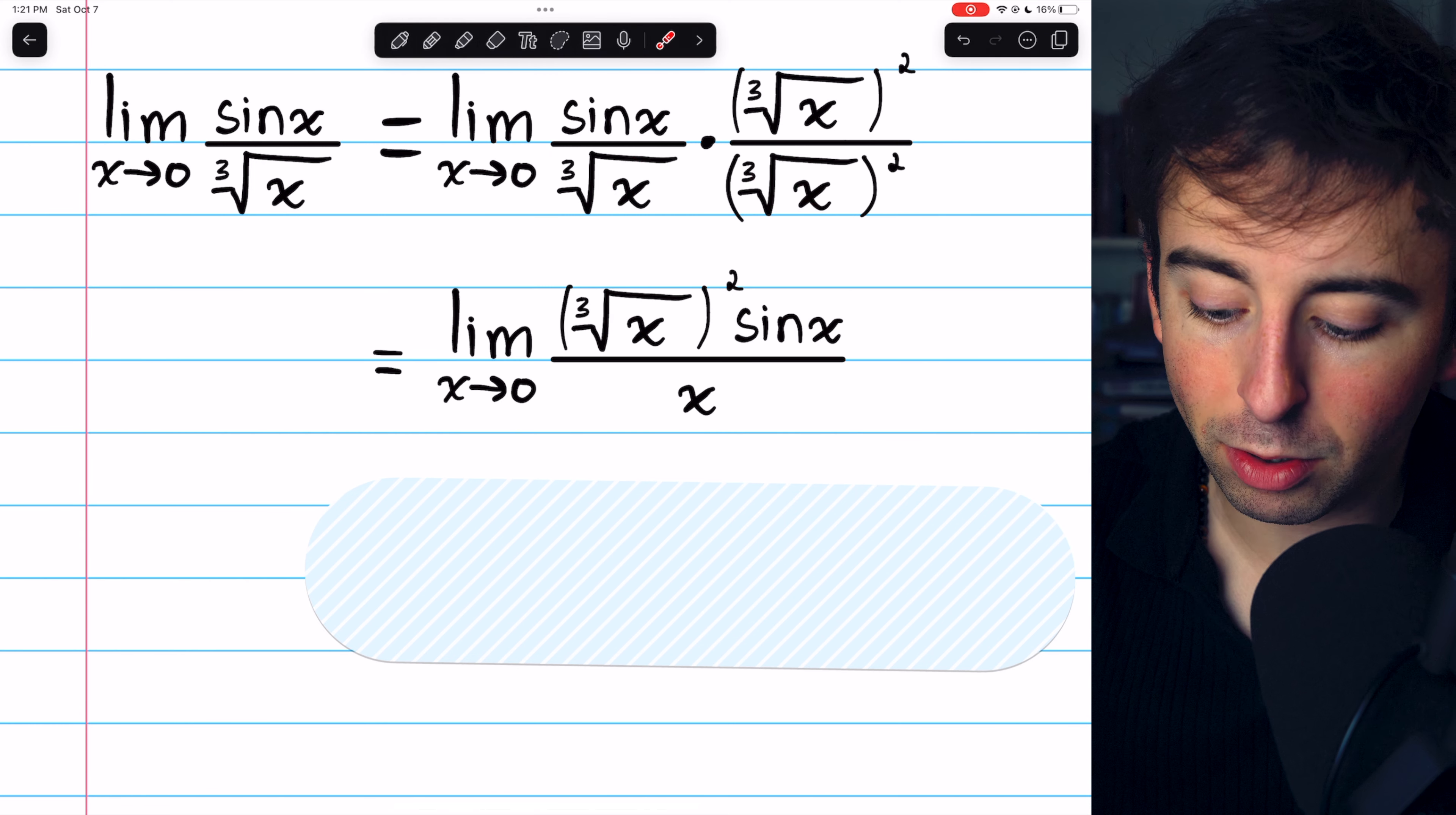Then, by the limit product law, we can split this limit up into a product of two limits we know. We can take cube root of x squared into its own limit, and multiply that by sine x over x in its own limit.